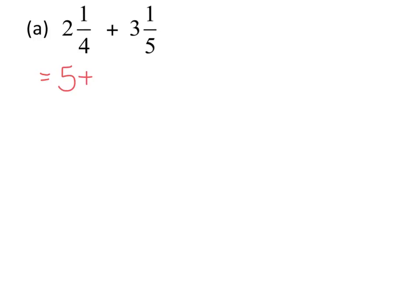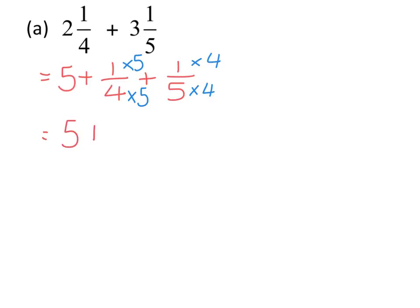Then we need to add on the two fraction parts: 1 quarter add 1 fifth. These two fractions have different denominators. When adding or subtracting fractions, the denominators need to be the same. So we multiply the first fraction by 5 on the top and the bottom, and the second by 4 on the top and the bottom, so the fractions stay equivalent.